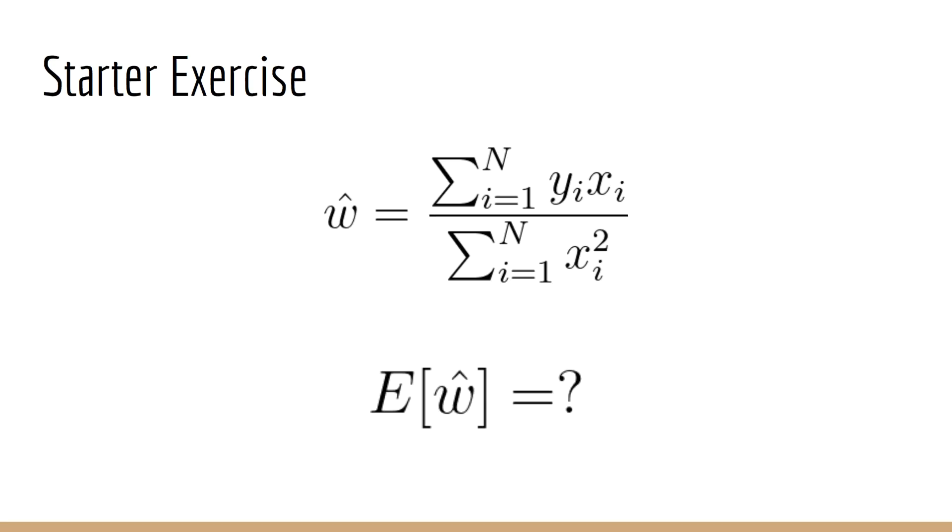As a simple starter exercise, let's consider what the expected value of w hat is. We'll begin with our expression for w hat, which is the ratio we found in the previous lecture. We know that for our purposes, x is not random, but always given.